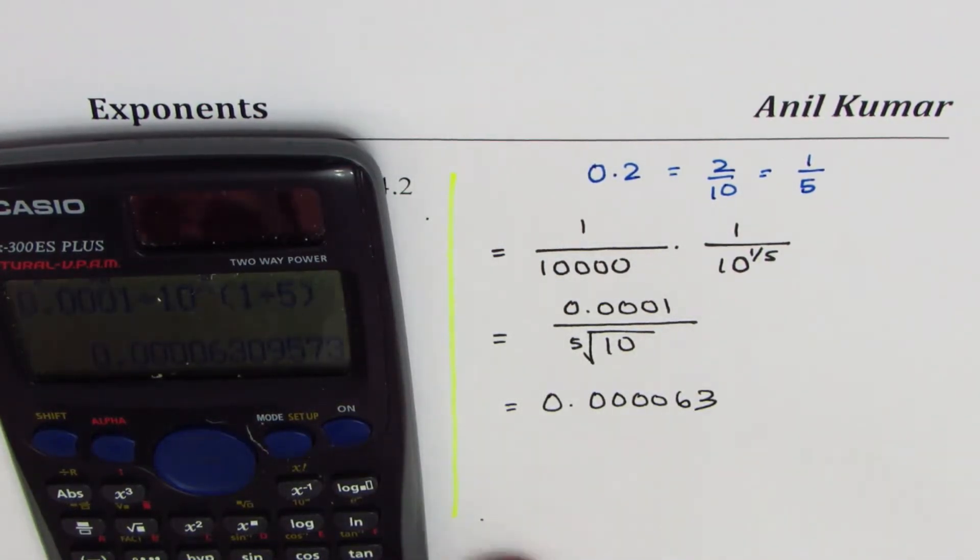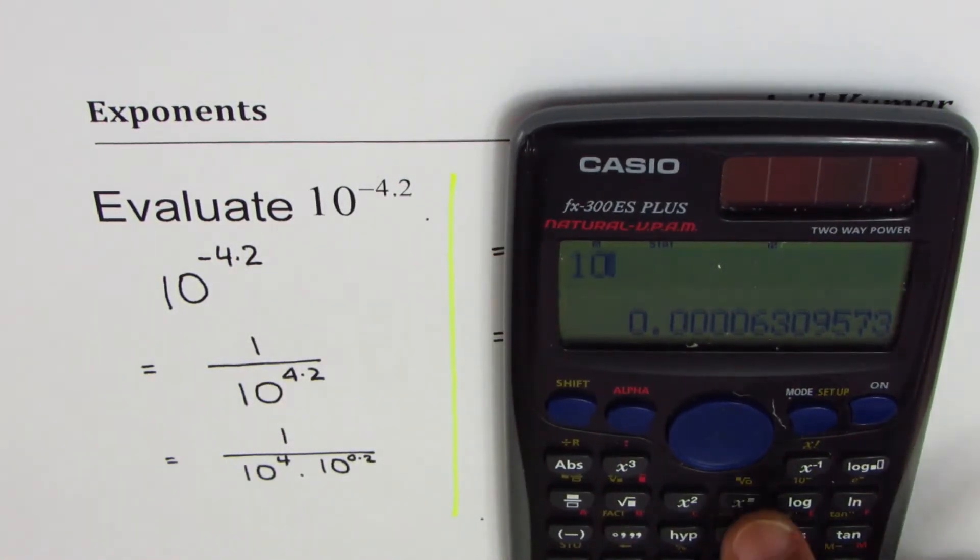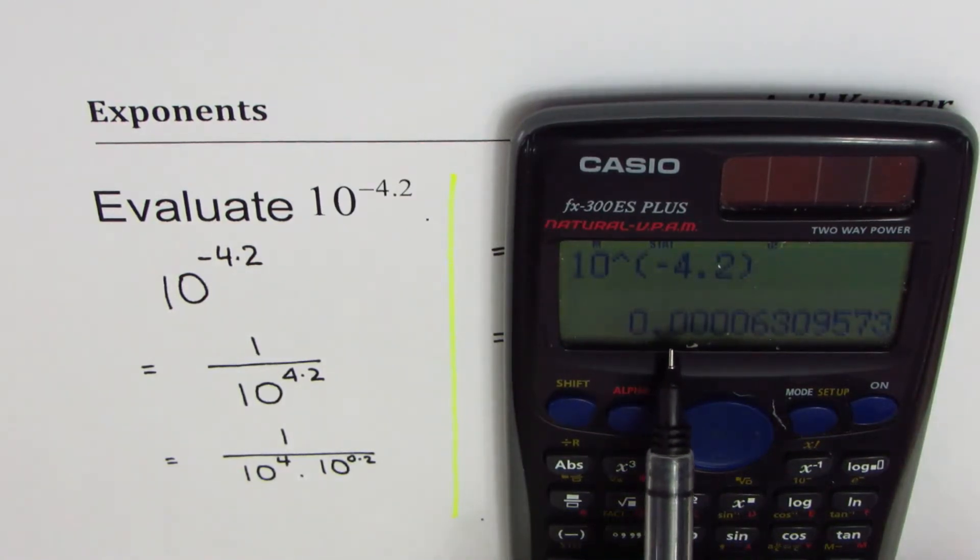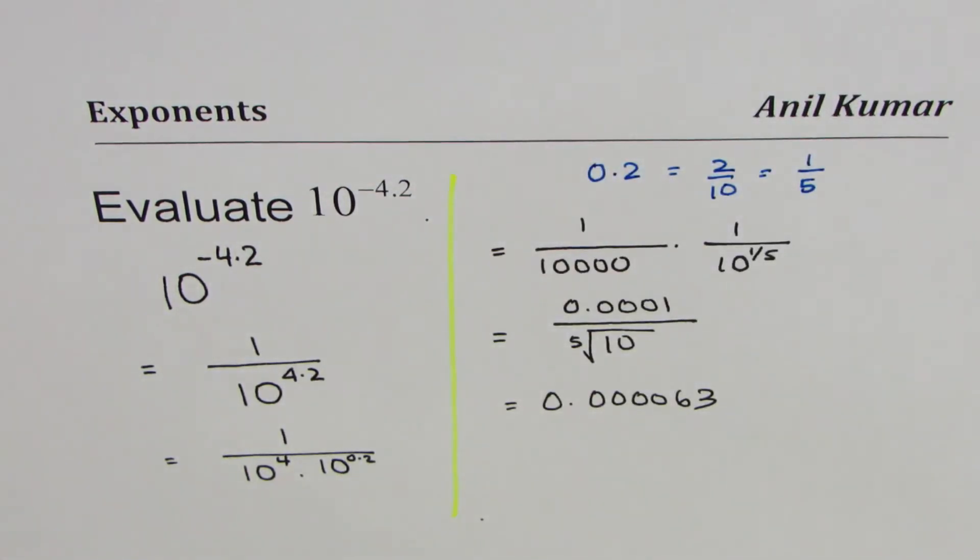Now let's check if 10 to the power of minus 4.2 equals the same answer. 0.0000630957 - the same thing. Perfect. So I hope you understand how to work with these kinds of exponents.